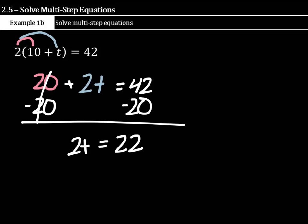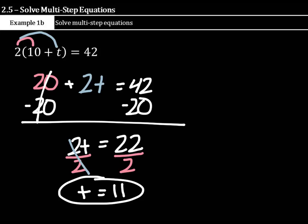And you're left with 2t equals 22. What is the opposite of 2 times t? Well, 2 divided by 2. That cancels. And you're left with t equals 11. And if you were to put the 11 back in for t, 10 plus 11 is 21 times 2 is 42. So you would know it. Check it out. But our answer is t equals 11.